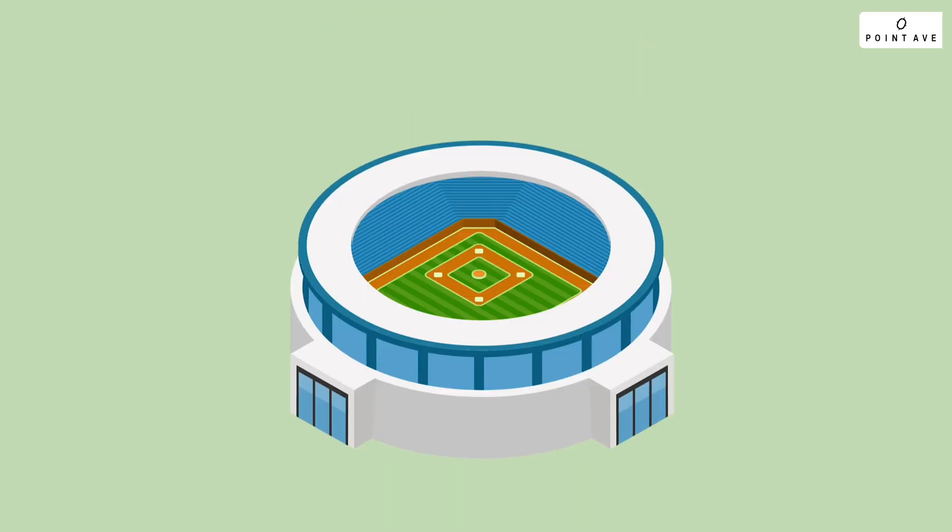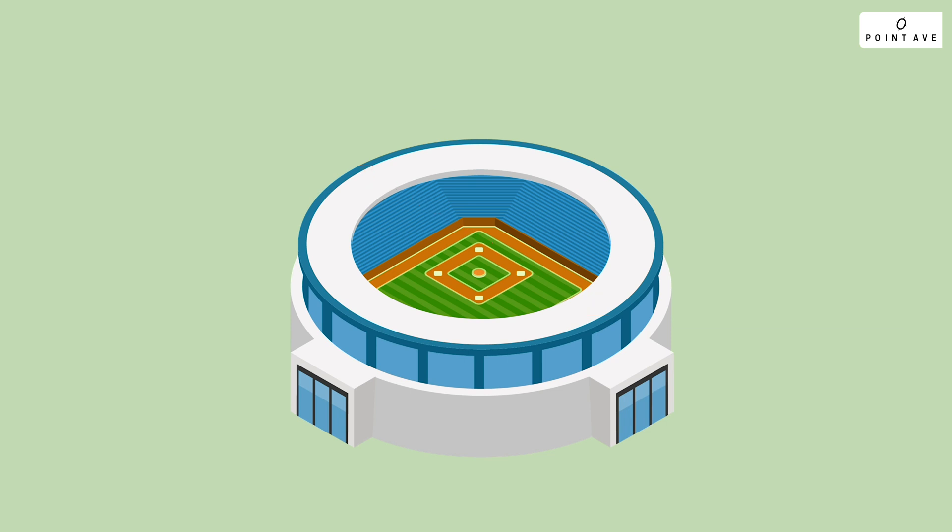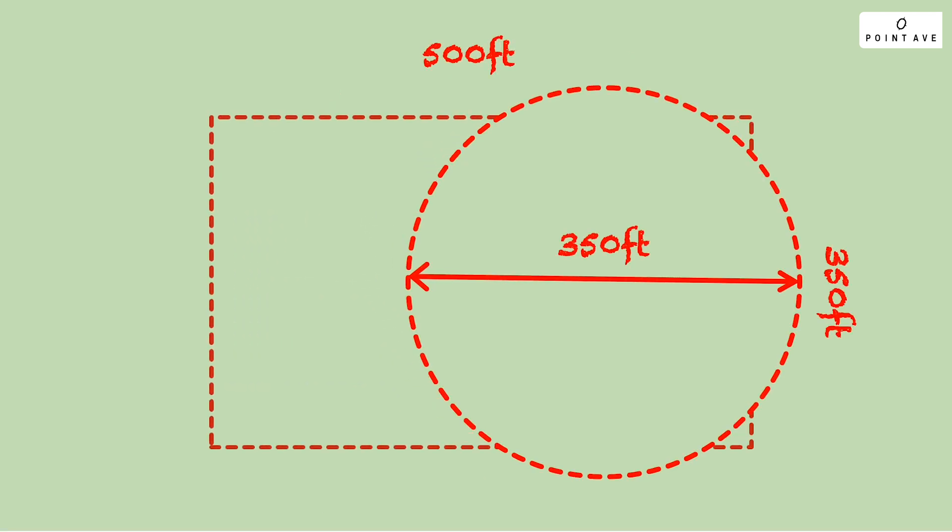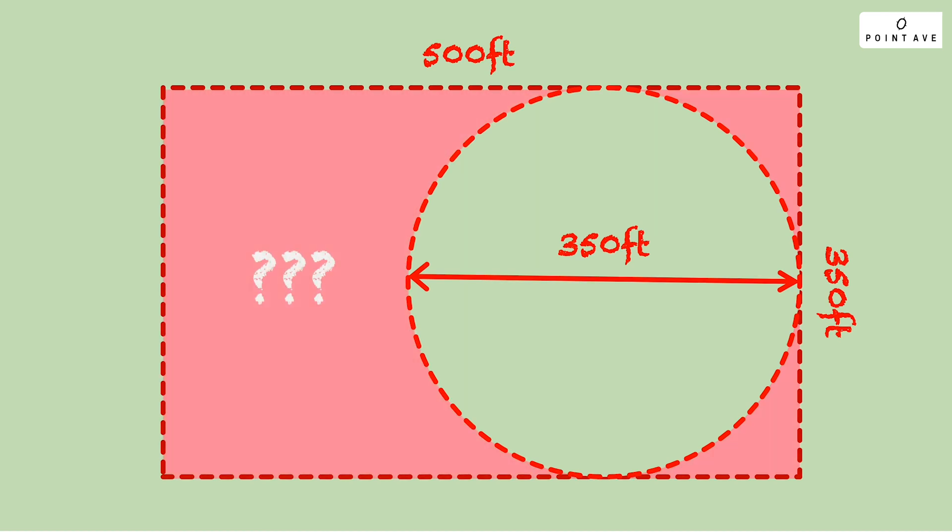A baseball stadium has a circular shaped field with diameter 350 feet. To allow the stadium to play football, they need to extend the field into a rectangle with dimensions 350 feet by 500 feet, building on top of the old field. About how much turf do they need to buy to cover the new parts of the field in square feet, rounded to the nearest square foot? We can already see that this is not so straightforward as just plugging into one of the formulas. We need to break it down step by step.